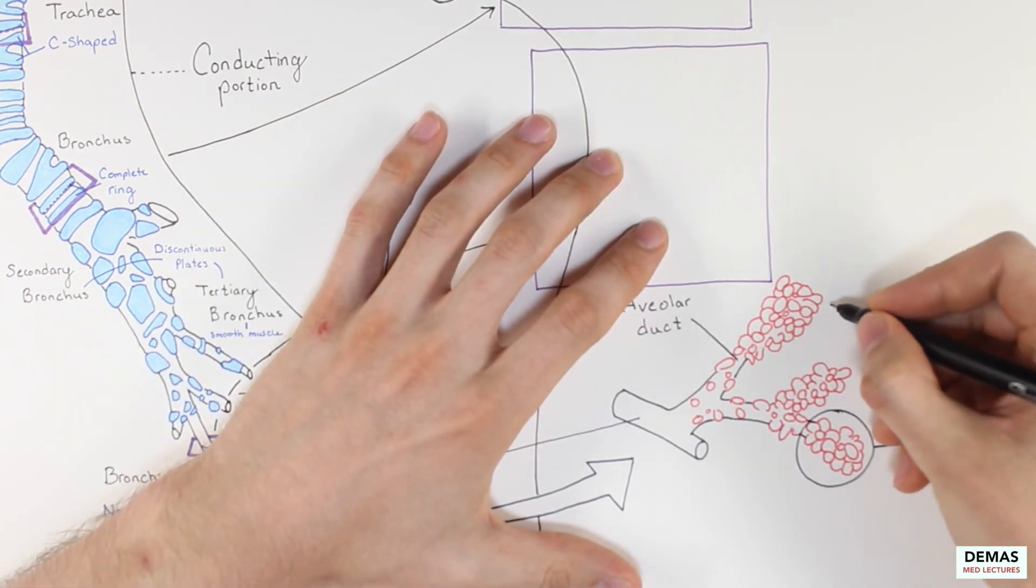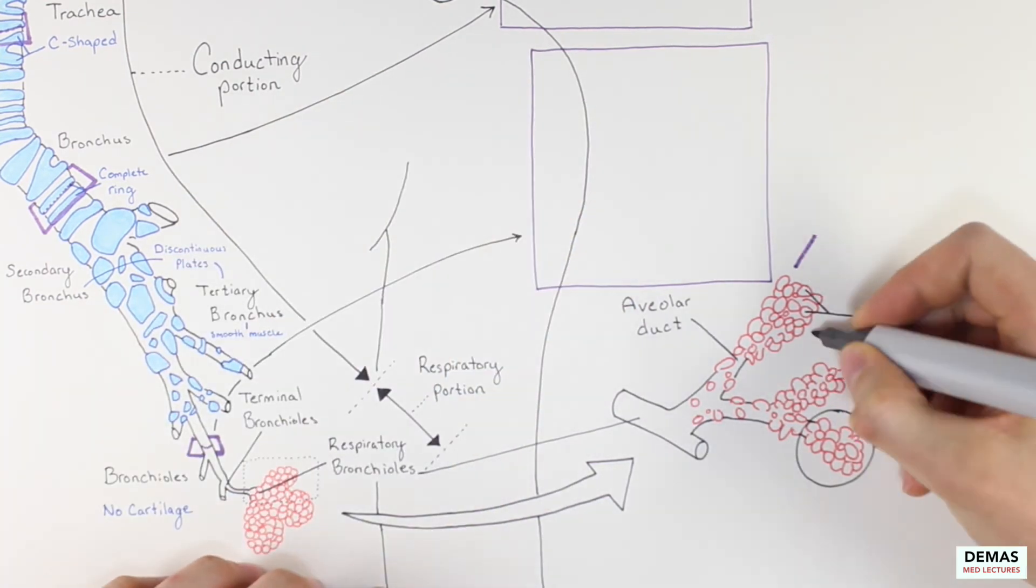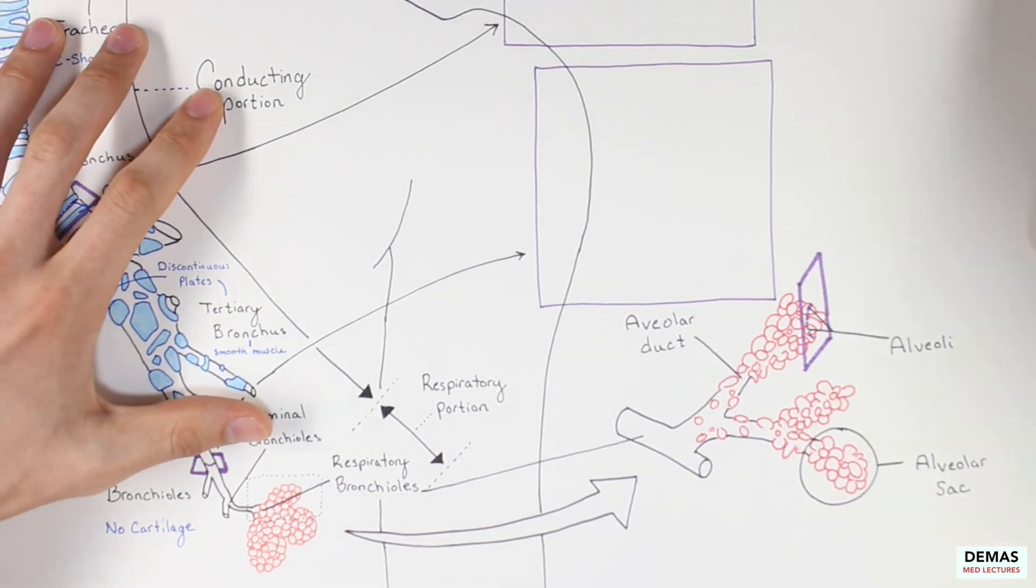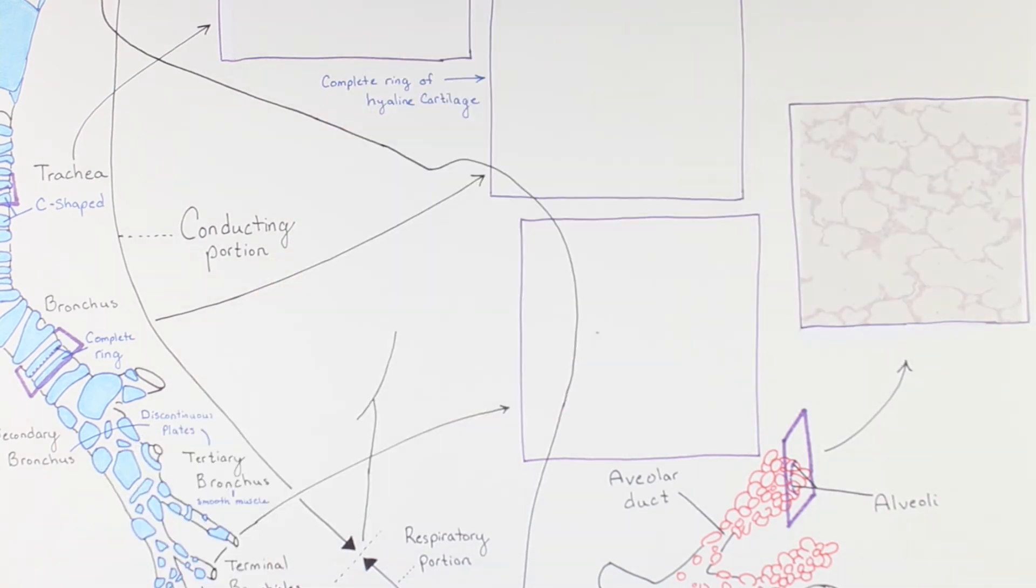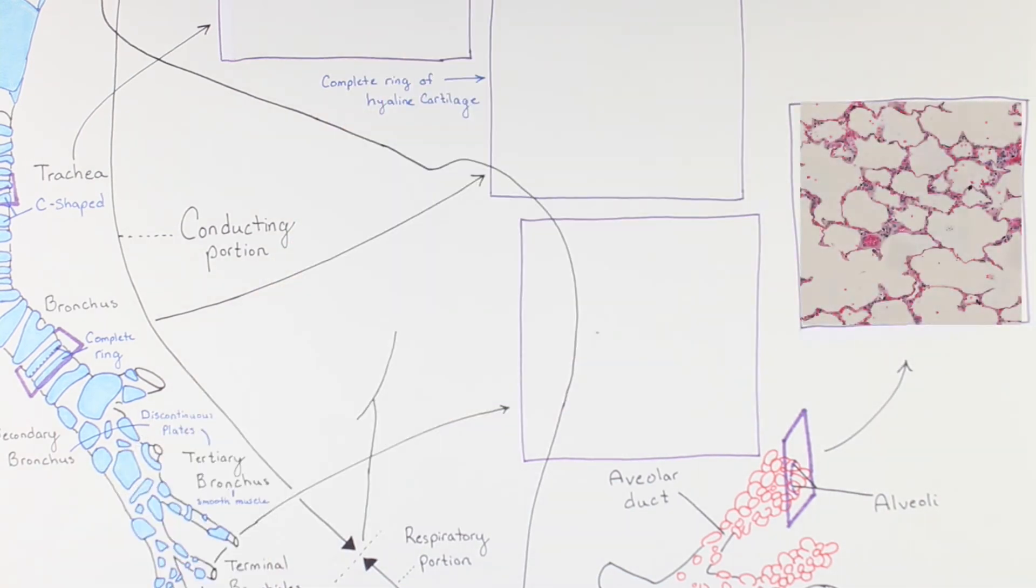Let's go ahead and take a cross section of the alveoli and investigate its histological properties. Notice the red blood cells that can be visualized in the wall of the alveoli that provide the immense surface area needed to provide gas exchange to the whole body. It is important to note that this fine structure is supported by elastic and collagen fibers.